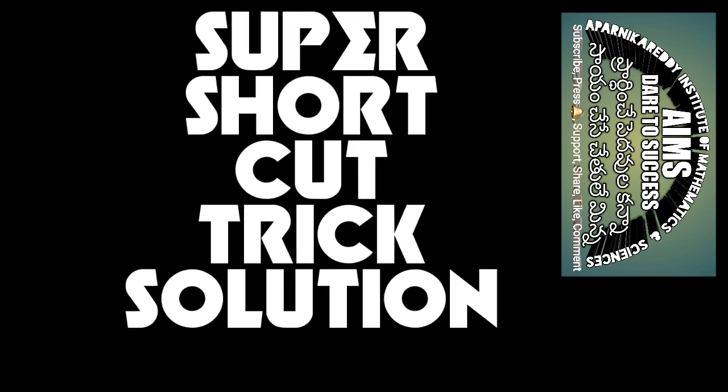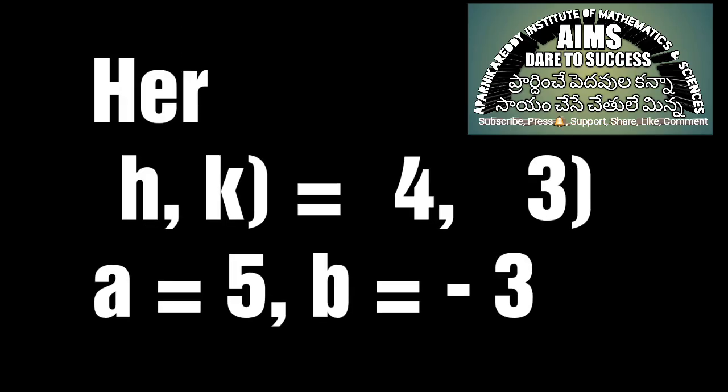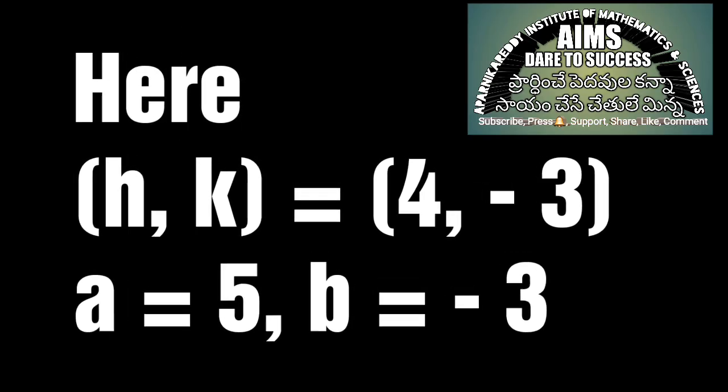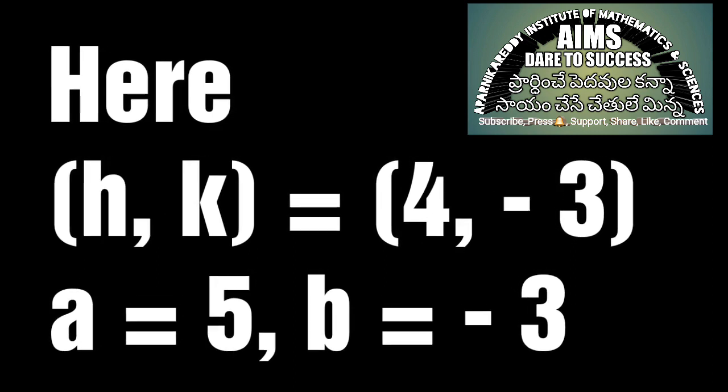Super shortcut trick solution, especially for you. According to the given question, the point (h, k) is (4, -3). From the straight line, a is 5 and b is -3.